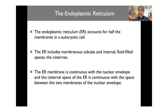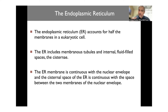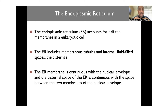Like the cytoskeletal network, the endoplasmic reticulum is present pretty much throughout the cell. It includes membranous tubules and internal fluid spaces called cisternae. The ER membrane is continuous with the nuclear envelope, so if you are asked whether the nucleus and the ER communicate, the answer is yes — and that happens at the level of their membranes.